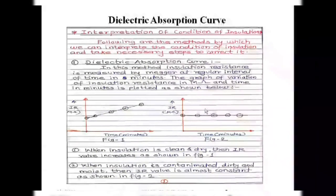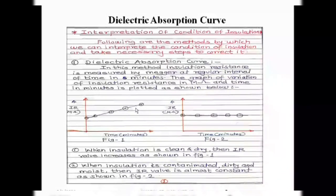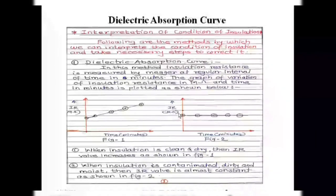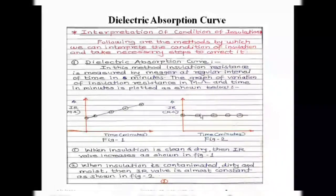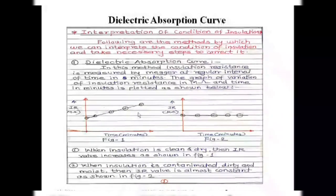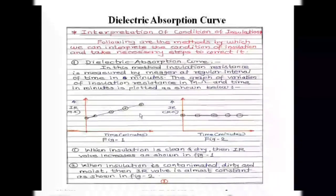By plotting the graph of insulation resistance versus time, we get the condition of insulation. The increase or constant behavior of insulation resistance is related to the dielectric absorption current flowing in the insulation. If that current flows continuously, we get graph figure number two. If the current decreases slowly and reaches zero, we get graph figure number one. This method gives us the condition of insulation by plotting IR versus time in minutes.